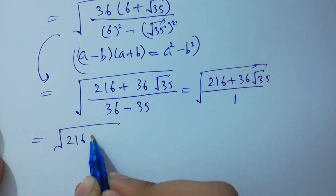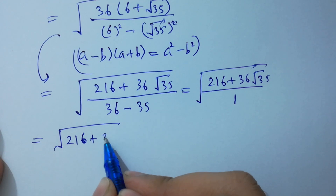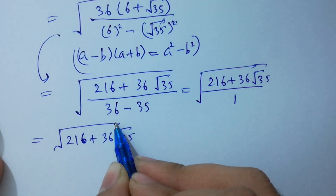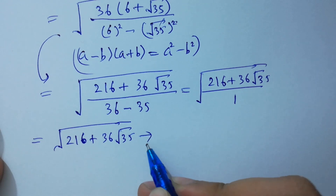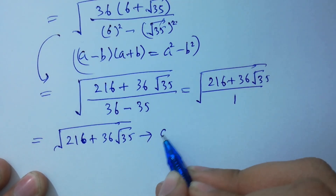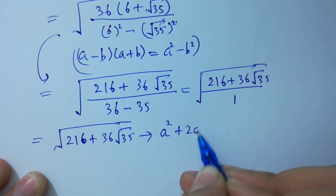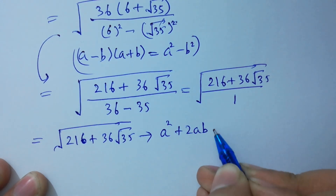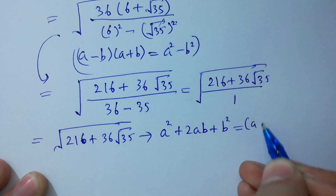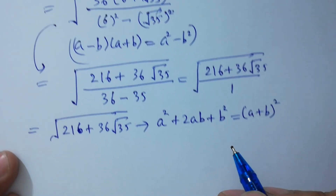So we have 216 plus 36 square root of 35. I am going to convert this using the identity a squared plus 2ab plus b squared, which equals (a plus b) whole squared. Follow the steps.